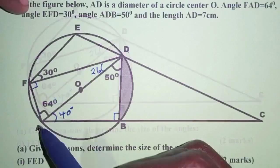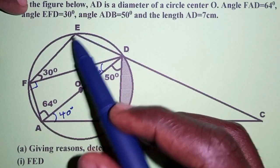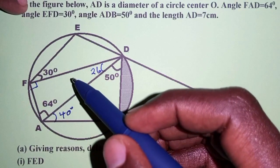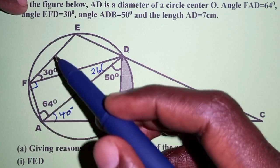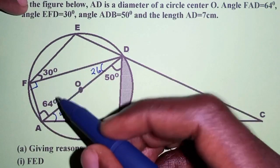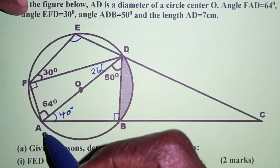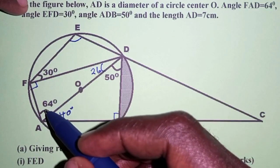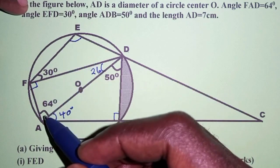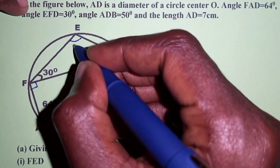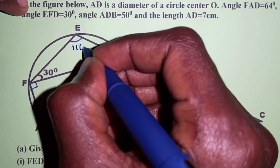Now consider the cyclic quadrilateral ADEF. The opposite angles of a cyclic quadrilateral add up to 180 degrees. So angle at E and angle at A are opposite, meaning 64 plus angle E equals 180. We take 180 minus 64, giving us angle FED as 116 degrees.